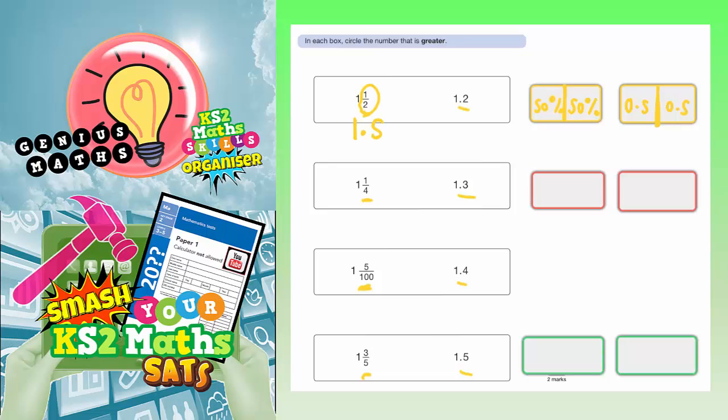So 1.5 is obviously greater than 1.2. So in this first pair of fractions and decimals, we need to circle the one that's greater. So 1.5 is bigger than 1.2, therefore one and a half is bigger than 1.2.